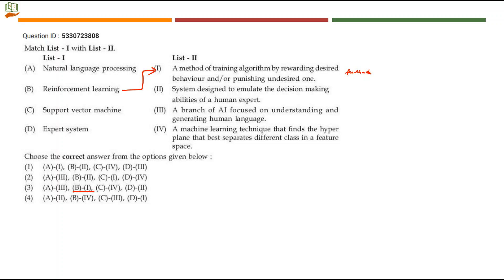The second statement: 'system designed to emulate the decision-making abilities of a human expert.' Emulate means simulate, and from the term 'human expert' you get the right term — expert system. A system designed to emulate the decision-making abilities of a human expert is an expert system. So D maps to 2. The third statement: 'a branch of artificial intelligence focused on understanding and generating human language.' This maps to NLP — natural language processing is a branch of AI focusing on generating and understanding human language. So A maps to 3.